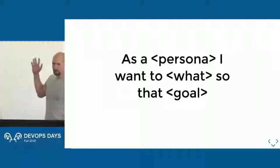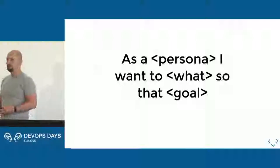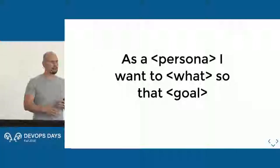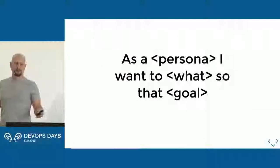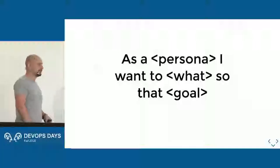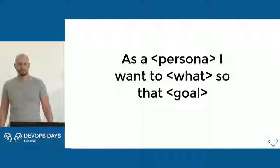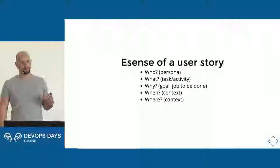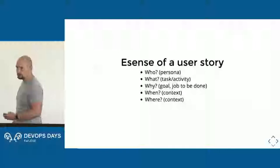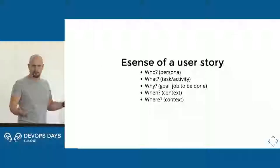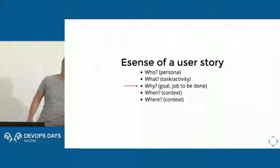The basic structure of a user story is something like this: a user story is an informal description of a feature or product. There are a lot of formats — this is just one of them. As a persona, I want to do something so that I can achieve some goal. It gives us context about the feature, what it's supposed to do, and most importantly what the user wants to achieve. The essence is: who, what, and why — and the most important part is the why.